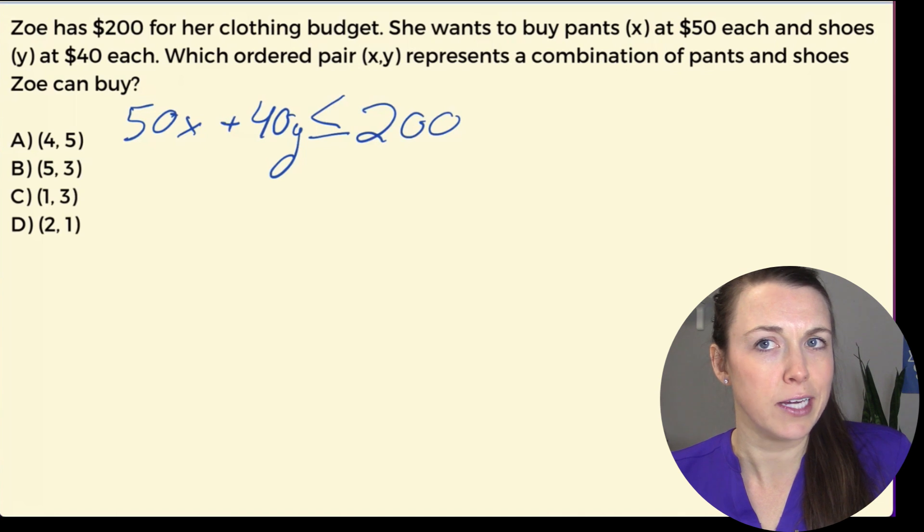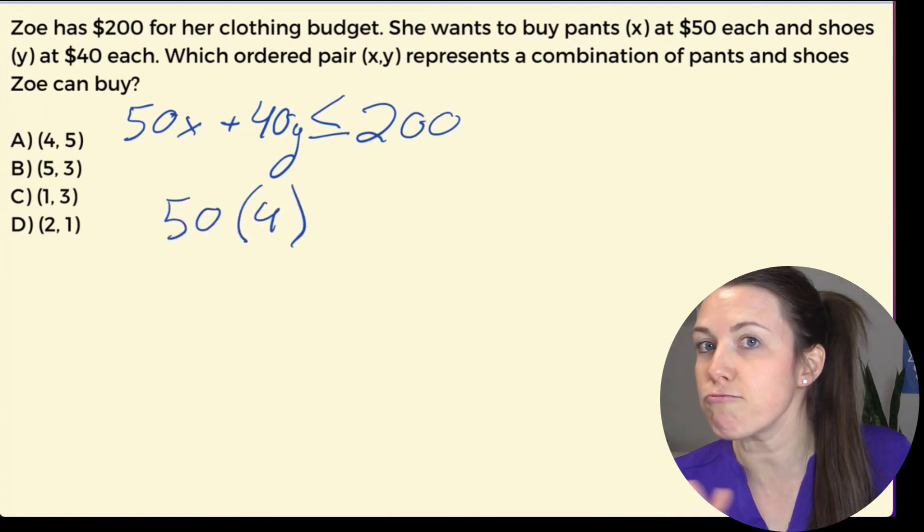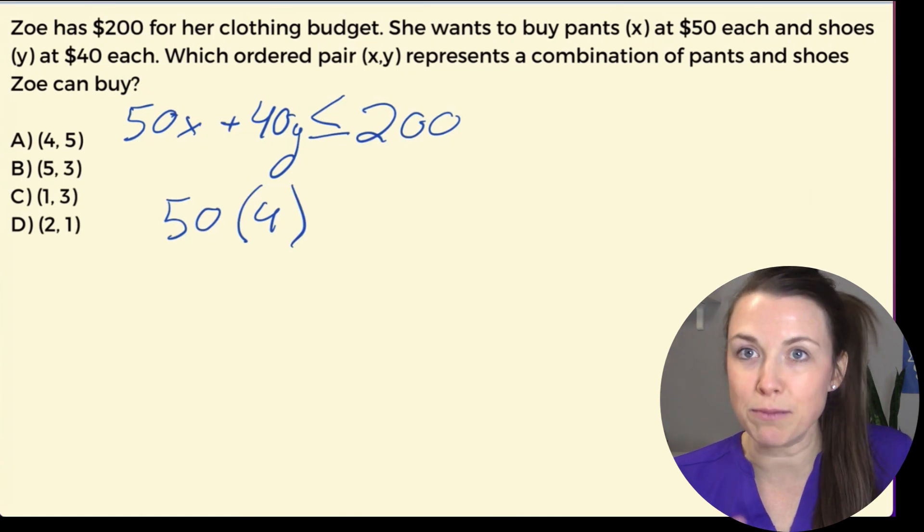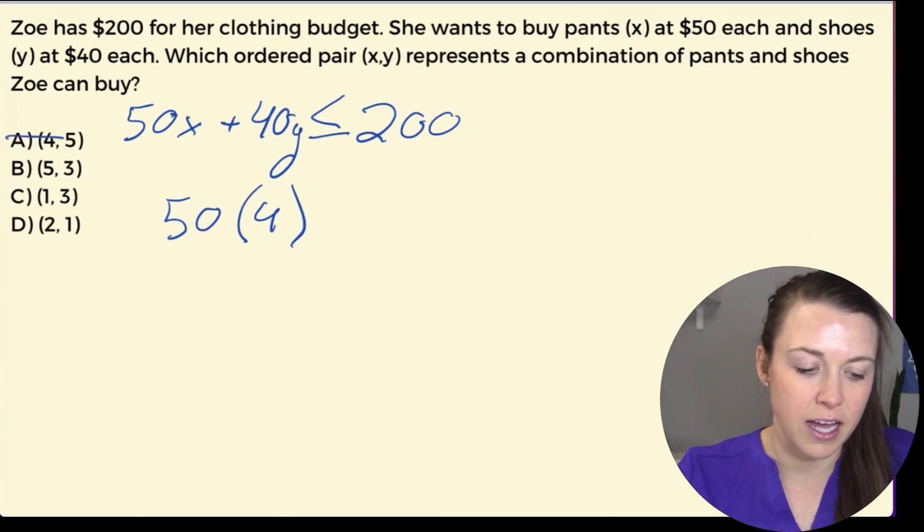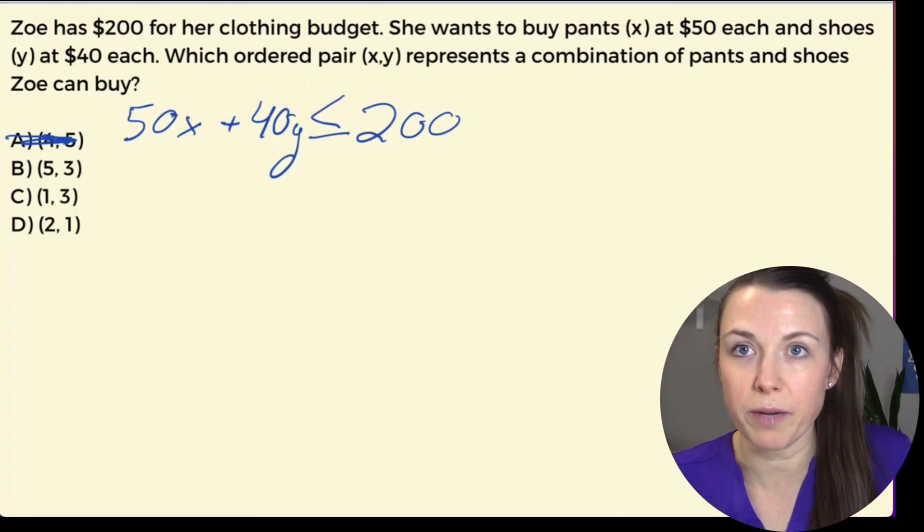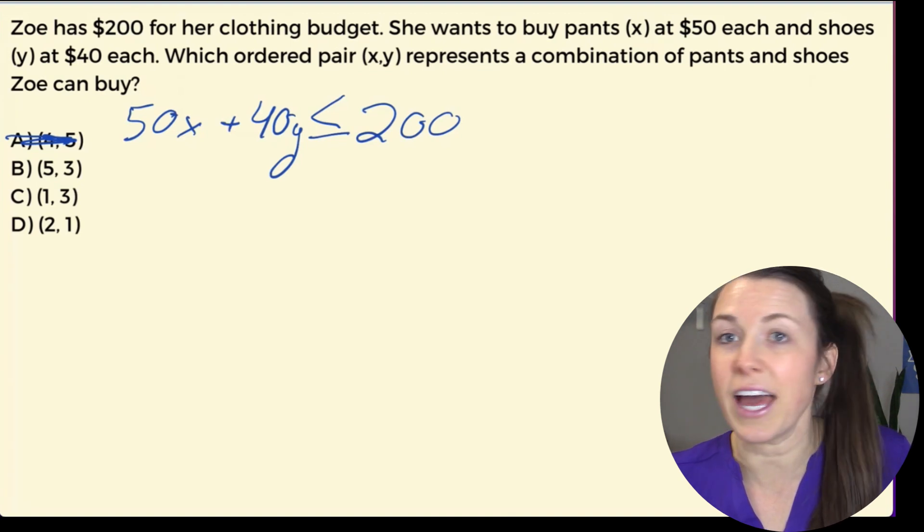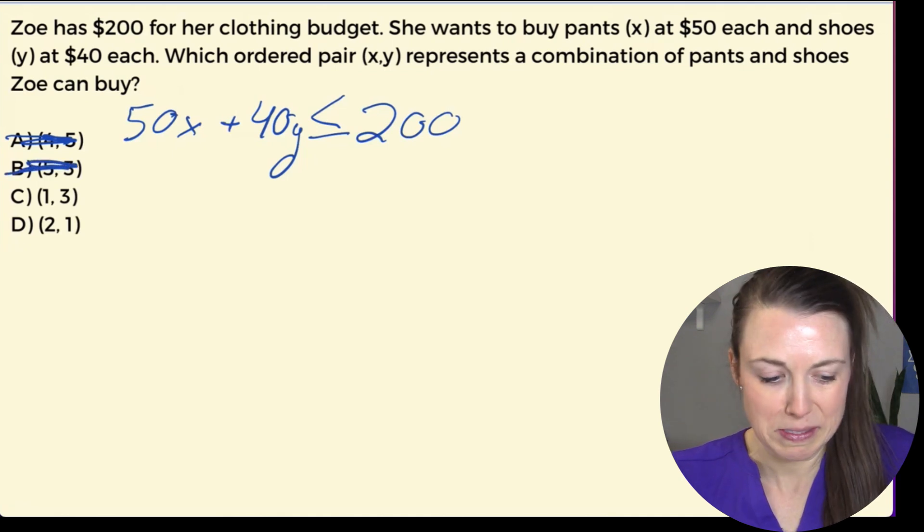Let's see how much she can buy. I have 50 times 4. Hold it right there. 50 times 4 is 200, right? So we don't even need to go further. We know that A is not the answer. You can't be buying four pairs of pants. Now look at B. She's trying to buy five pairs of pants. So 50 times 5, that's 250. That is over as well. So that quickly eliminates B.